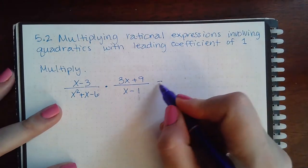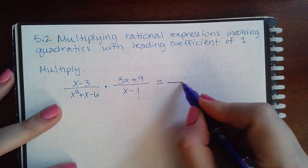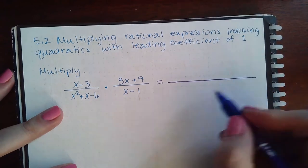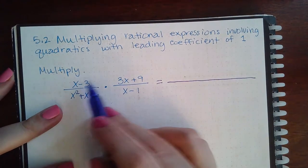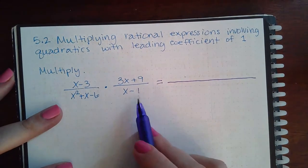So I do have to factor them. So I'm going to write it as one giant fraction because when you multiply, you just multiply the tops together and then the bottoms together.